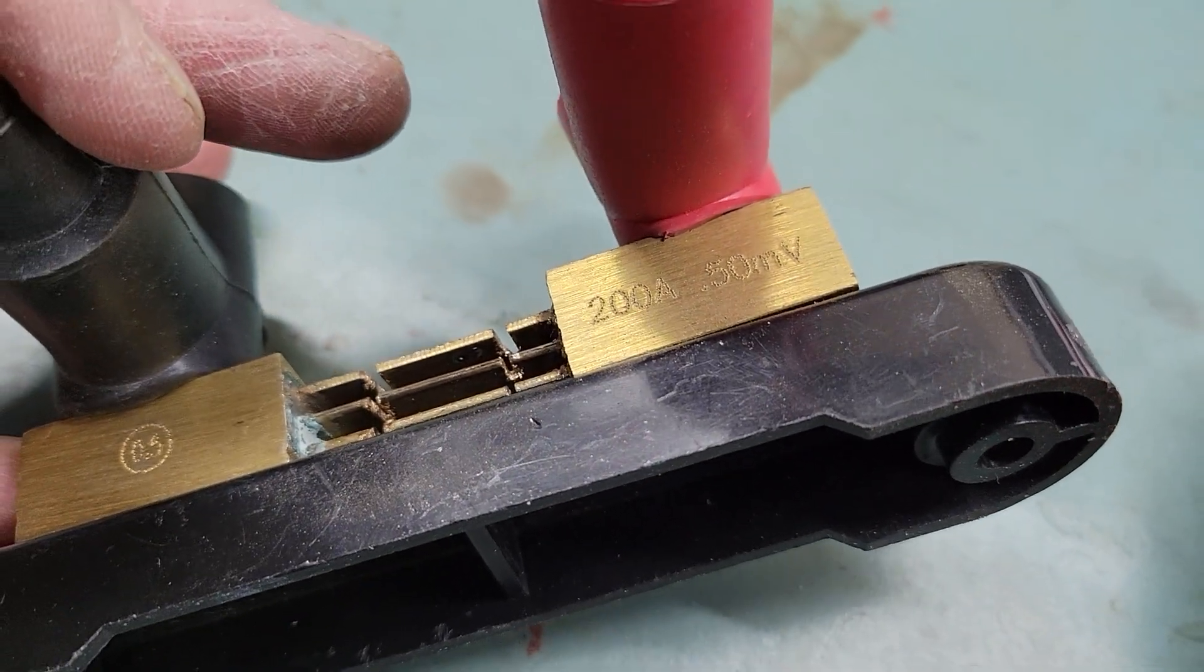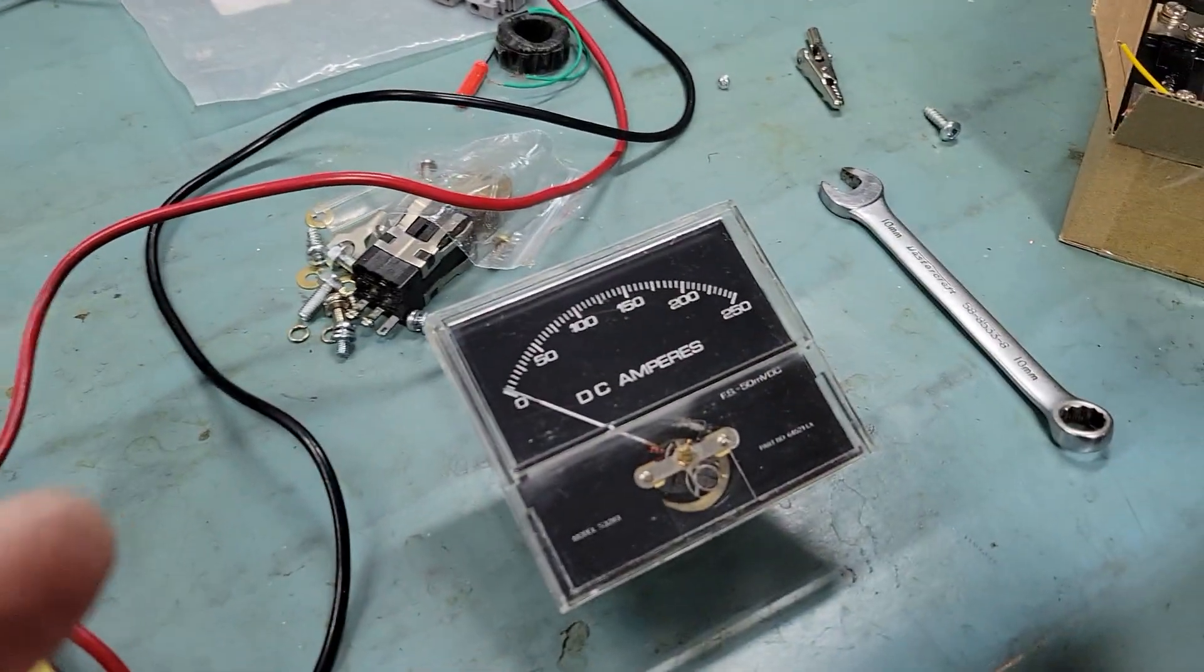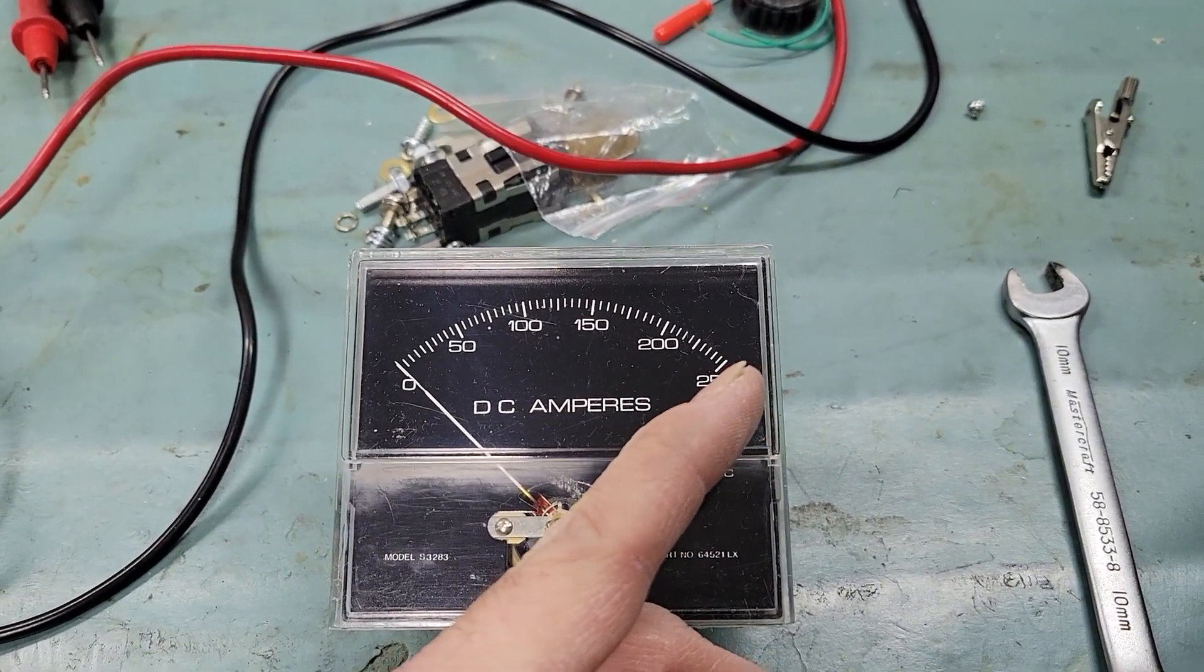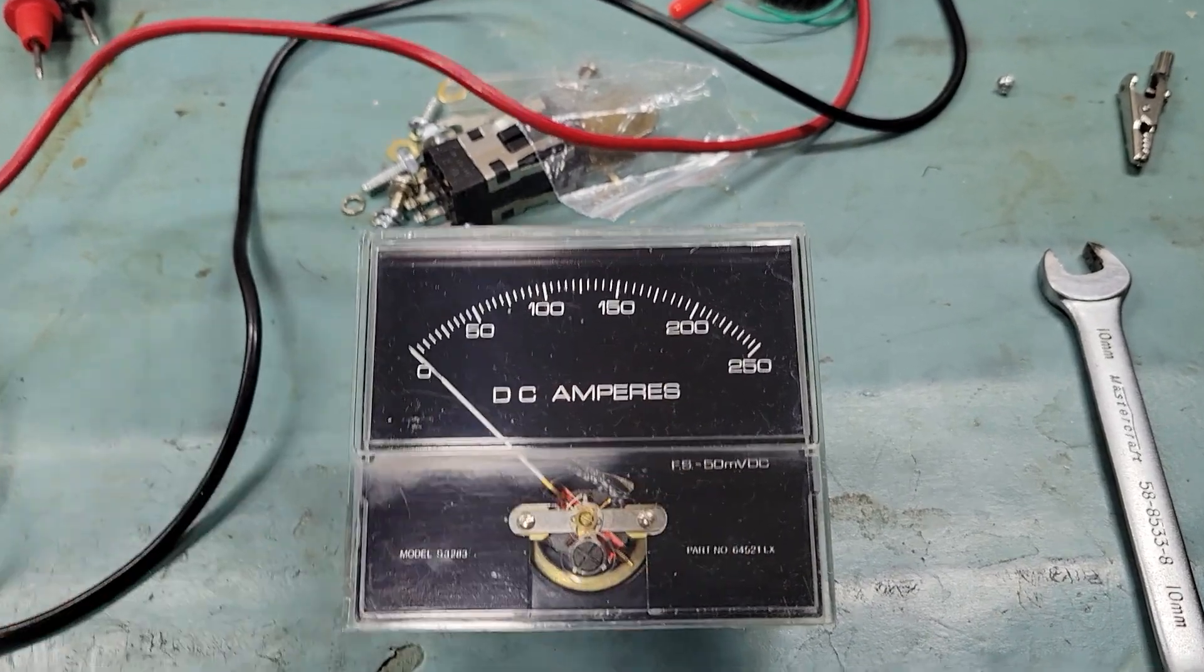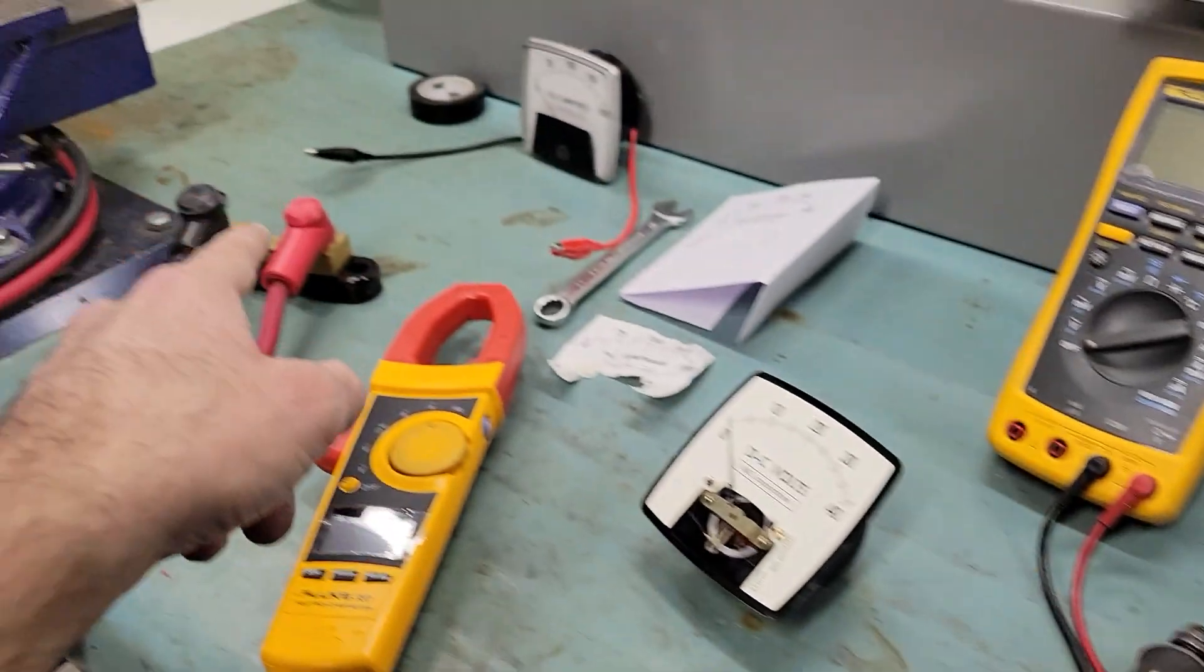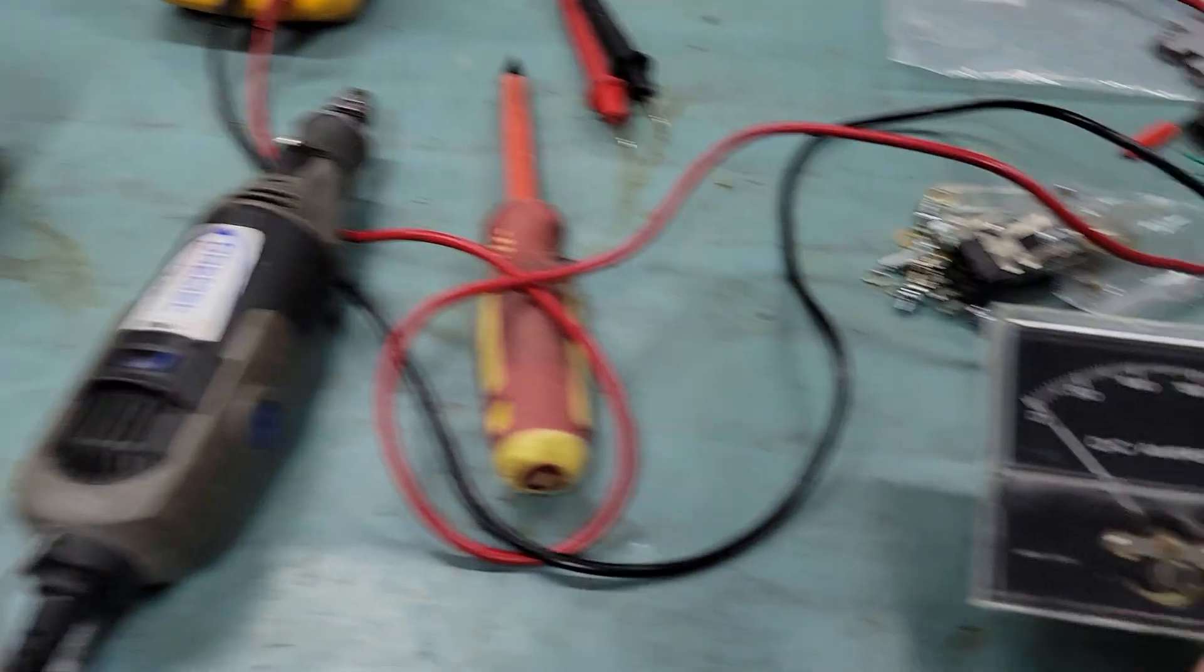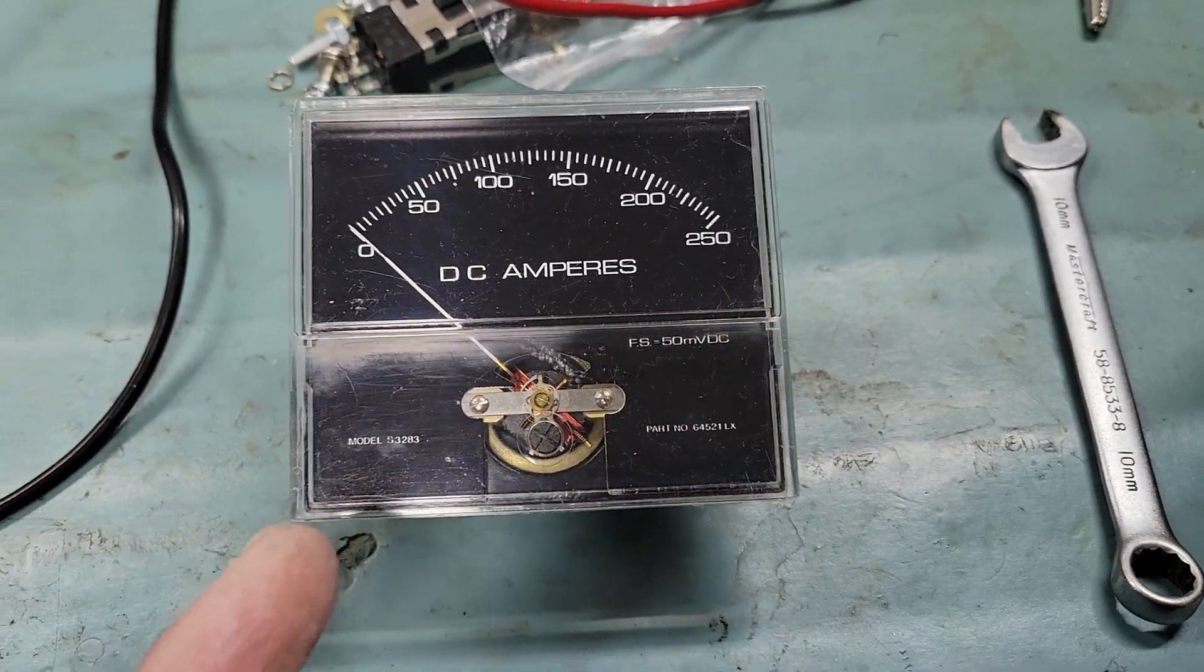This one here you see is a 200 amp 50 mV shunt. What I will need is a meter with 200 amps on the maximum reading and 50 mV. I could not use this one because if I apply 50 mV to this one, which corresponds to the 200 amps of this one, it will reach 250 amps, which does not correspond. So you need to tune it, and that is what I made.